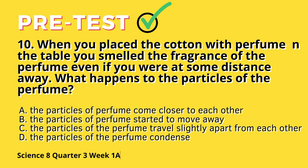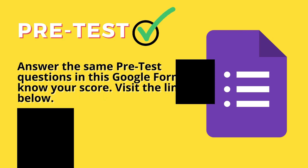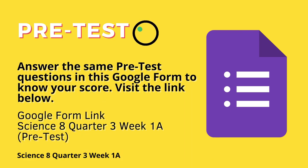Question 10: When you place cotton with perfume on the table, you smell the fragrance of the perfume even if you were at some distance away. What happens to the particles of the perfume? A. The particles of perfume come closer to each other. B. The particles of perfume started to move away. C. The particles of the perfume travel slightly apart from each other. D. The particles of the perfume condense. Answer the same pre-test questions on this Google form to know your score. Kindly visit the link below found on the description area of this video module.